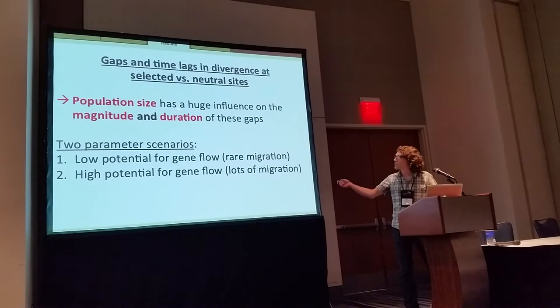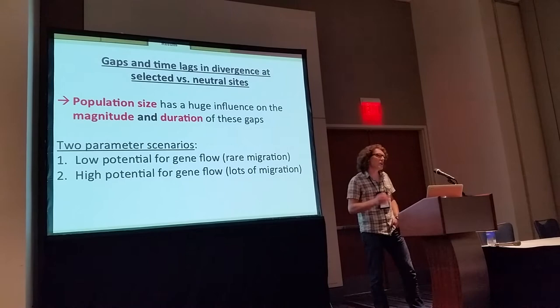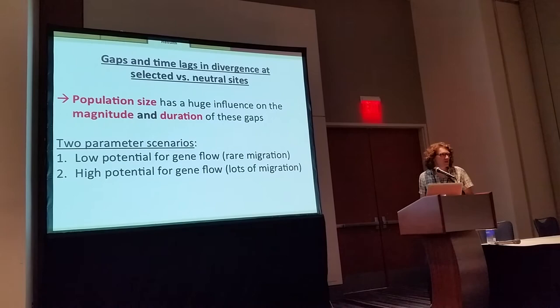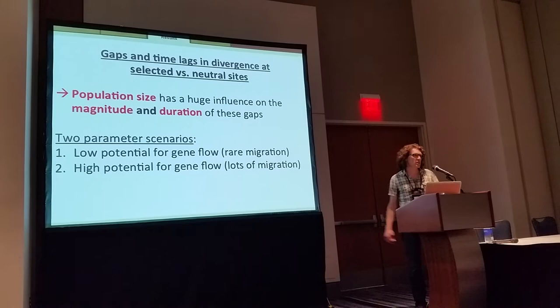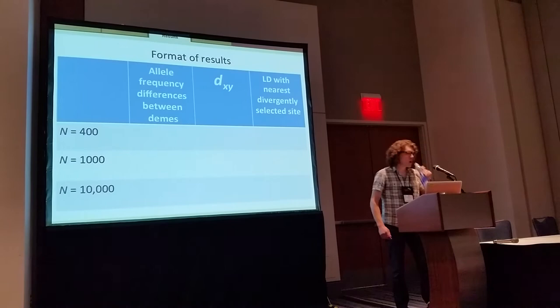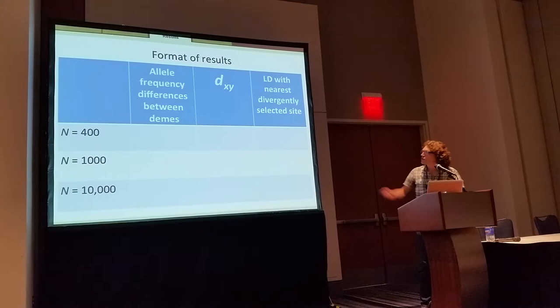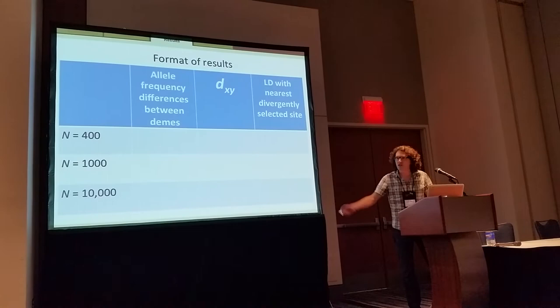Of the many parameters we've looked at so far, population size has a huge influence on both the magnitude and the duration of these divergence gaps. I'm going to show you results from two different parameter scenarios: one with a very low potential for gene flow — less than one individual per generation migrating between the DEMs — and one with a very high potential for gene flow. Results will be displayed as a three-by-three grid.